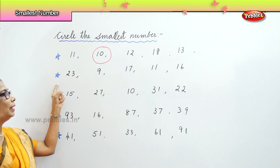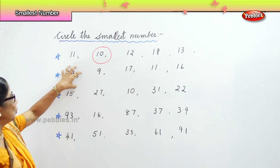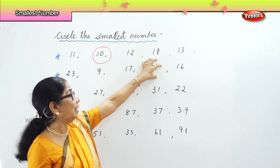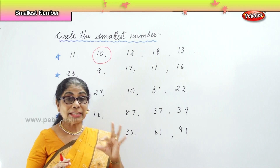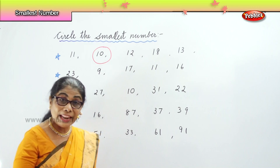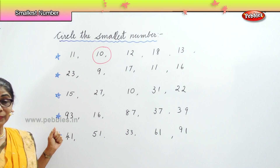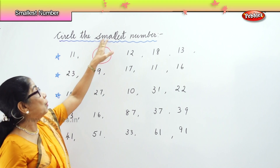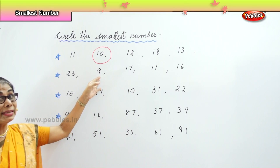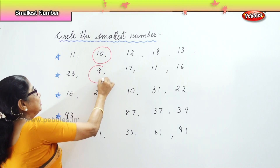Now look carefully here. I've given you a mix-up of numbers. We have twenty-three in the twenties, single digit nine, seventeen, eleven and sixteen. We've given you a mix of three types: single digit, teens like eleven, seventeen, sixteen, then twenty-three. Which is the smallest number in this? It's very easy — nine, because it is a single digit. Single digit nine is the smallest among these.